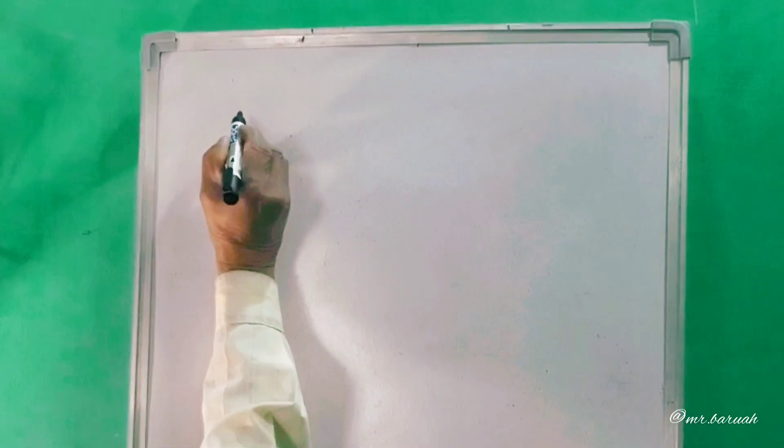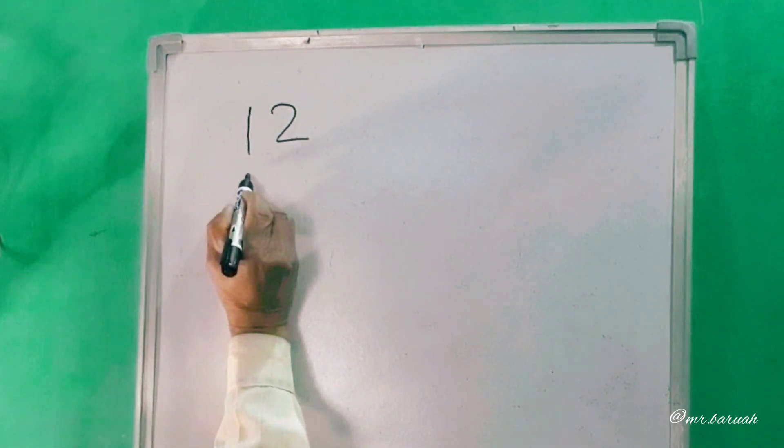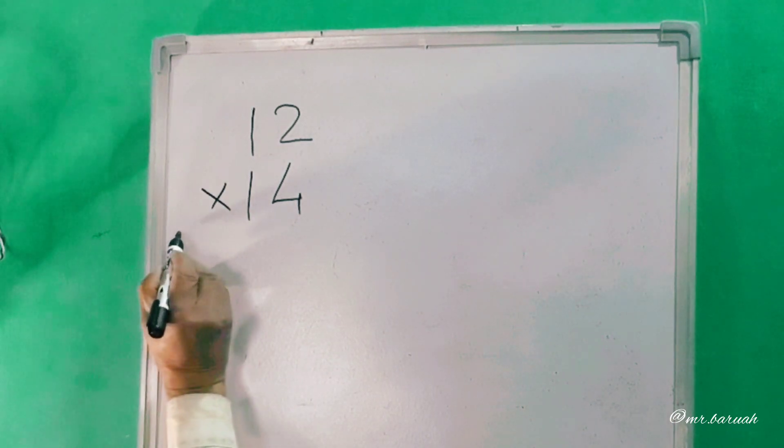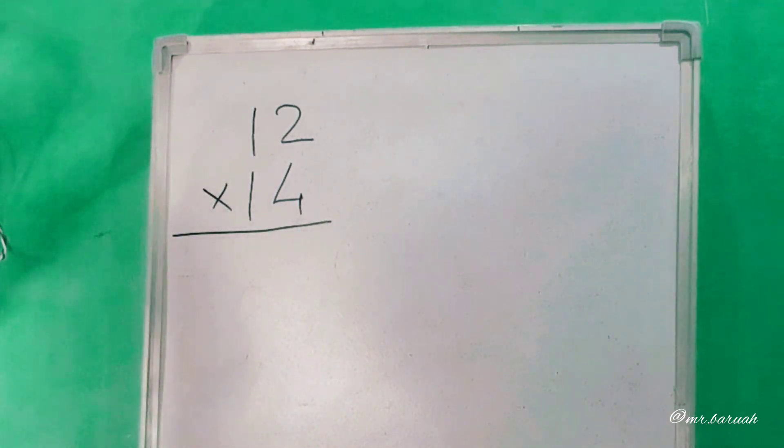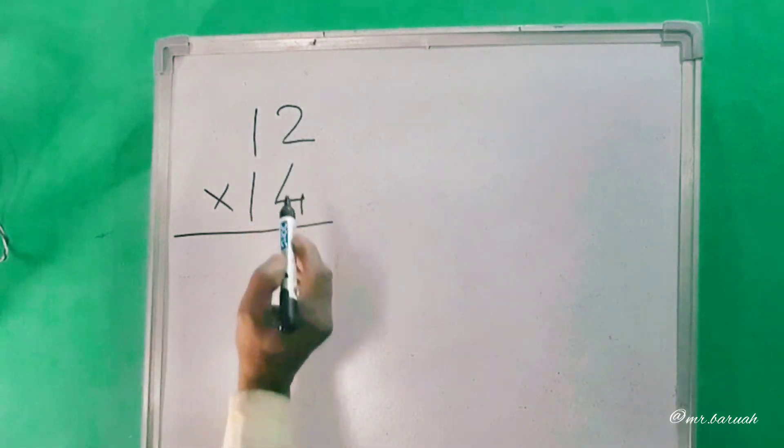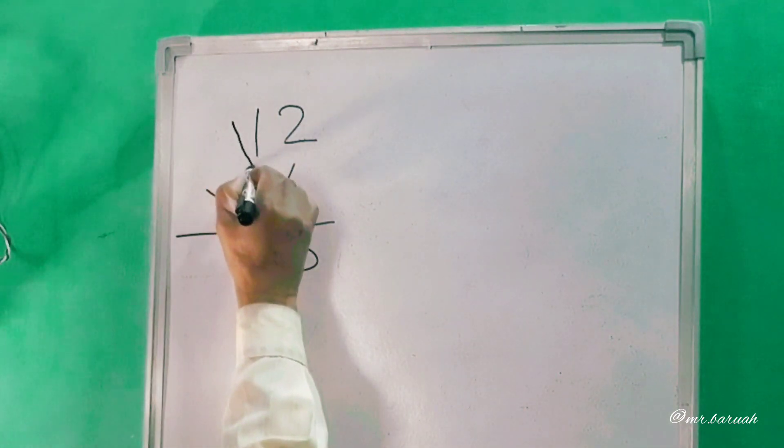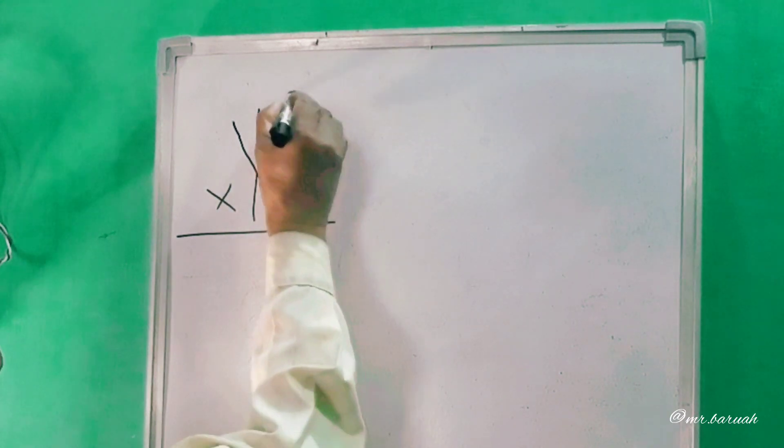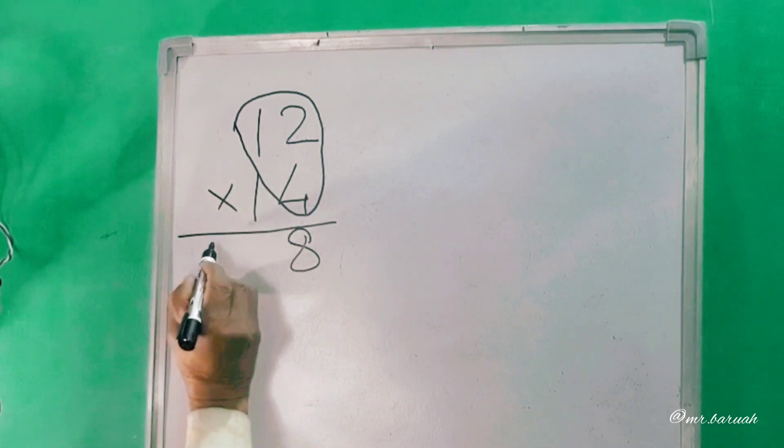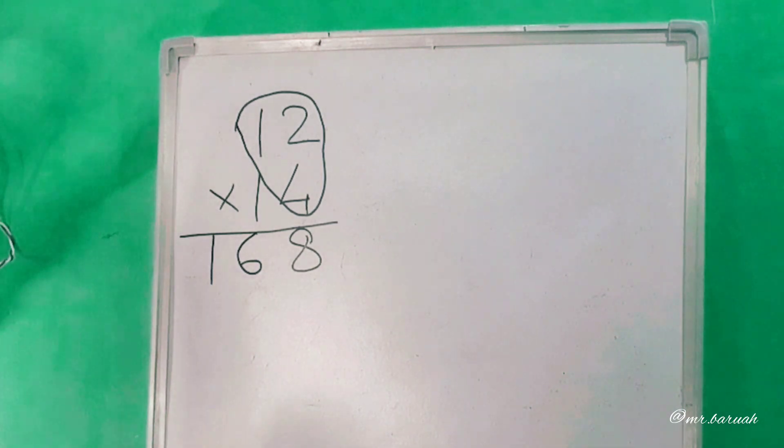I will write 12 into 14. 12 into 14. 12 into 14 equals 168.